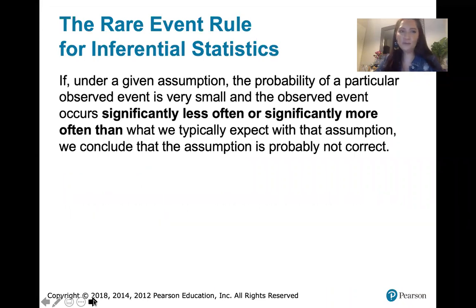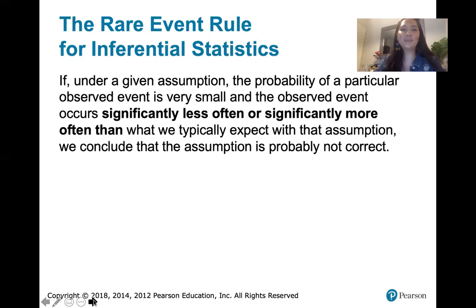Here's the rule. It says: if under a given assumption, the probability of a particular observed event is very small, and the observed event occurs significantly less often or significantly more often than what we would typically expect given that assumption, then we can conclude that the assumption is probably not correct.